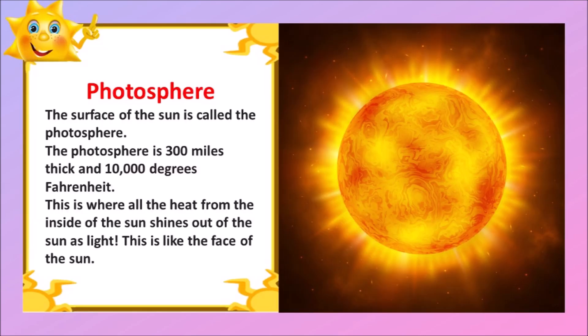The photosphere is 300 miles thick and 10,000 degrees hot in Fahrenheit. This is where all the heat from inside of the Sun shines out of the Sun as light. This is like the face of the Sun.